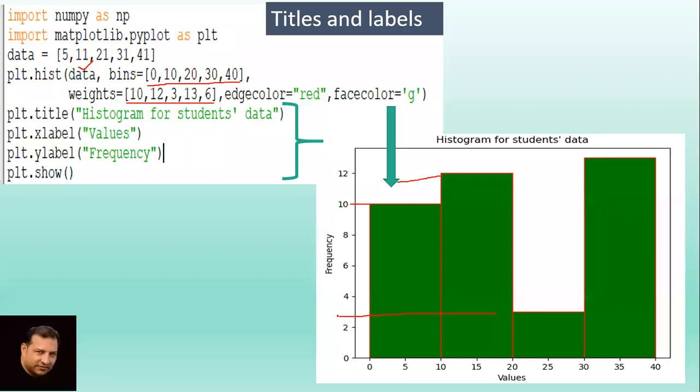You can see this is 10, then we have 12, 3, like that. The values for x and y axis are created automatically by these functions. We do not have to worry about all these. Next is edge color - I have given here as red, so you can see red boundaries for all the bars. Face color equals g - the face color means the filled color of each bar. It is green.